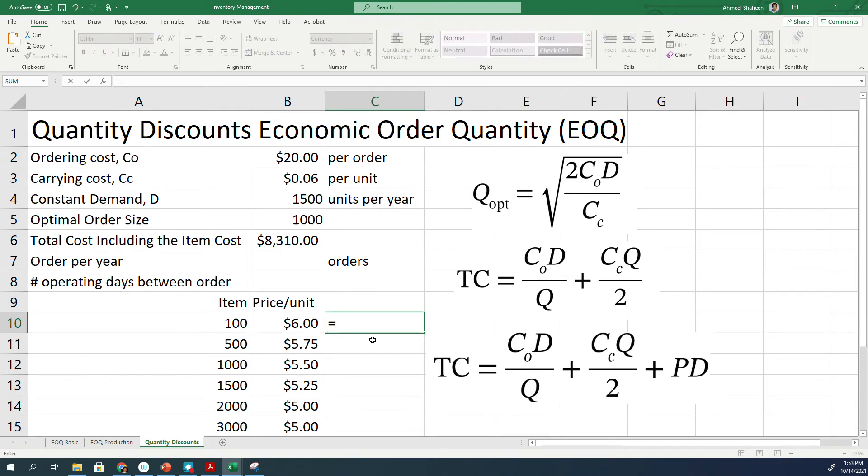Let's calculate the cost here. In this case, we are ordering 100 items. So C order cost times demand stay the same. I'm going to freeze these cells because I will use them for all these cells down below, for all other items divided by the Q.